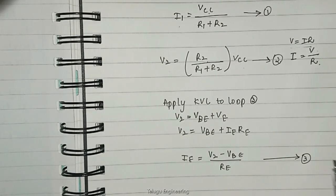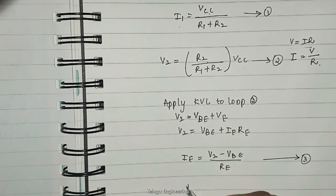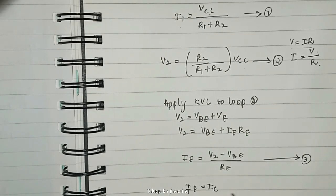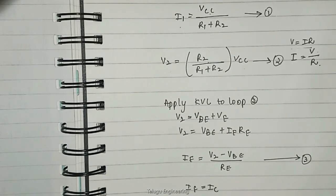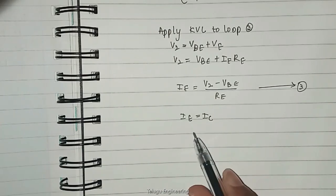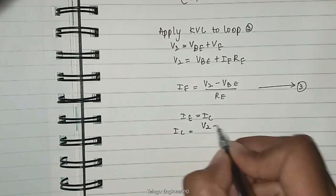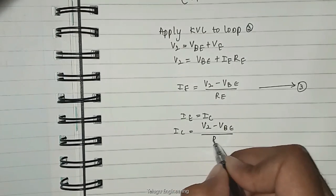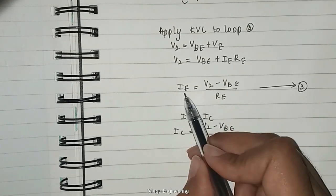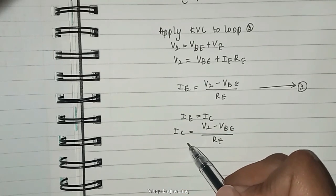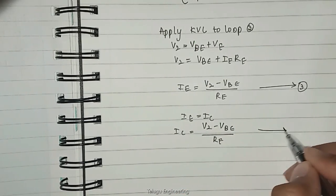Generally, for a CE configuration, IE equals IC. We are all aware of this. IE equals IC. Now IC can be written as V2 minus VBE by RE, because IE equals IC. Let this be equation number four.